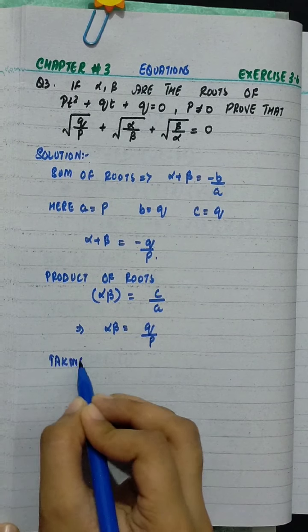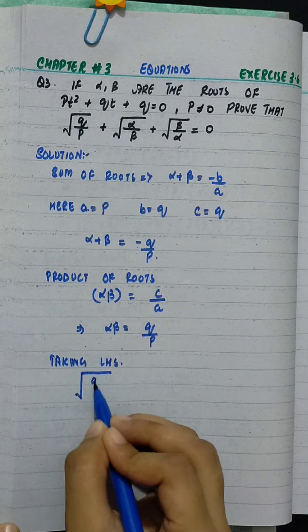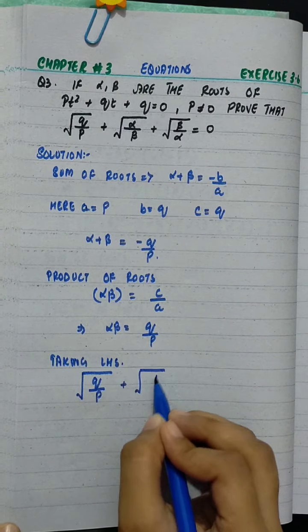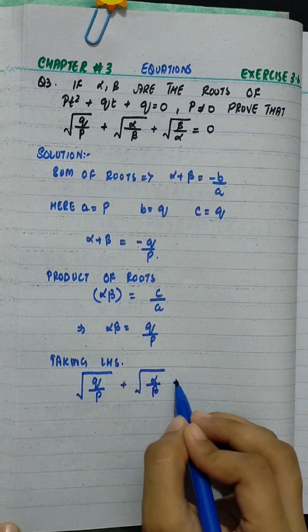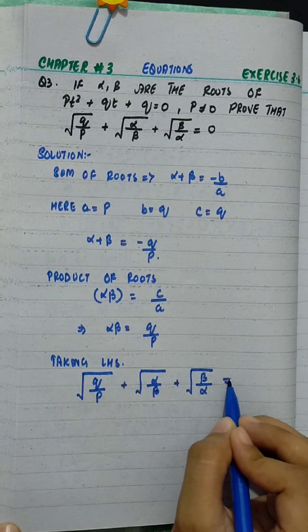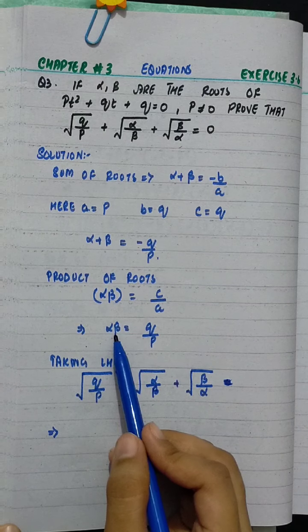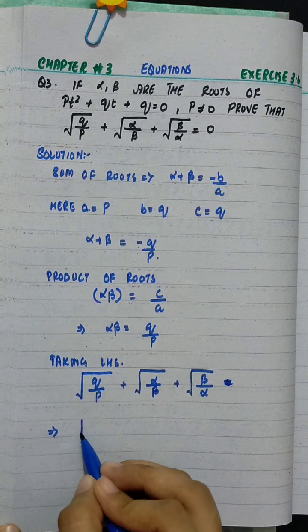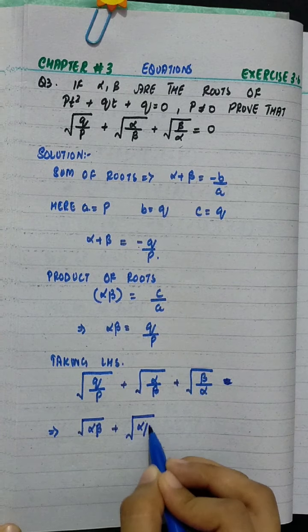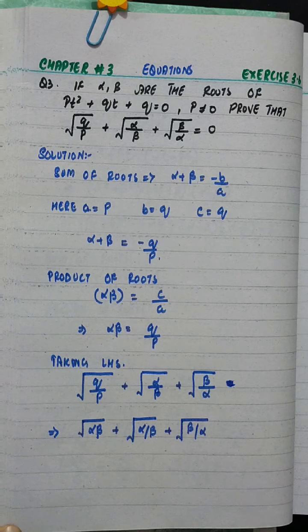Now taking the left-hand side: √(q/p) + √(α/β) + √(β/α). Since q/p equals alpha times beta, this becomes √(αβ) + √(α/β) + √(β/α).